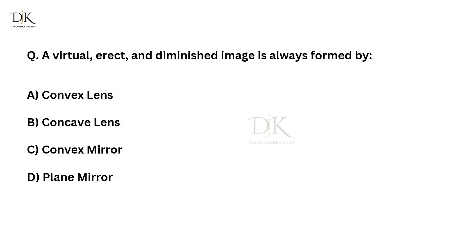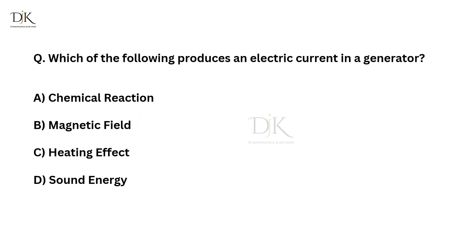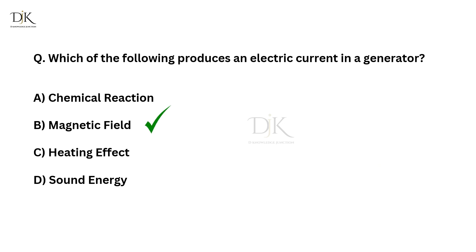A virtual, erect and diminished image is always formed by? Correct answer is concave lens. Which of the following produces an electric current in a generator? Correct answer is magnetic field.